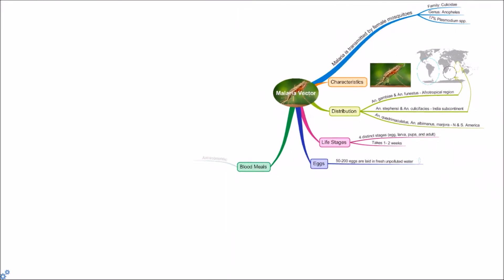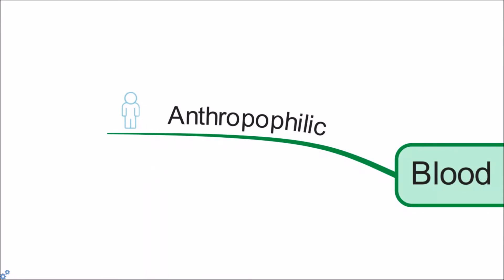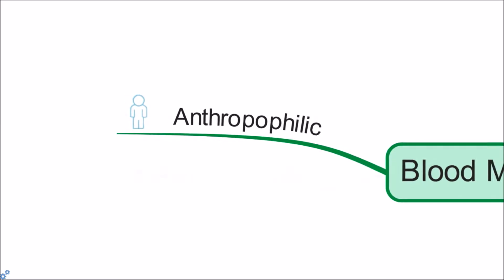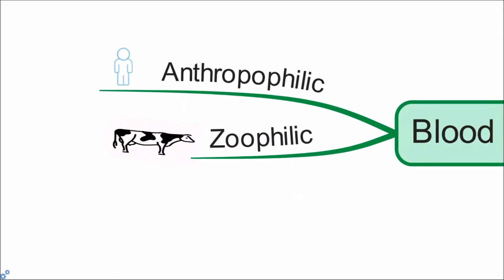Blood meals. Some Anopheles mosquitoes prefer to feed on human beings. These mosquitoes are said to have anthropophilic behavior, while zoophilic mosquitoes prefer to feed on animals, especially cattle.